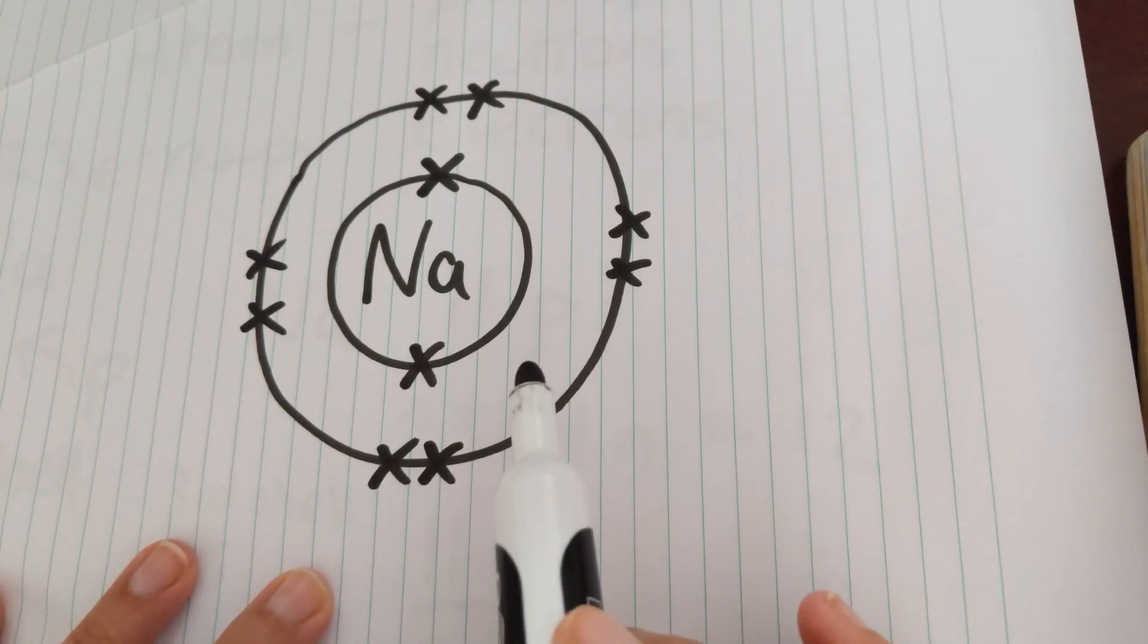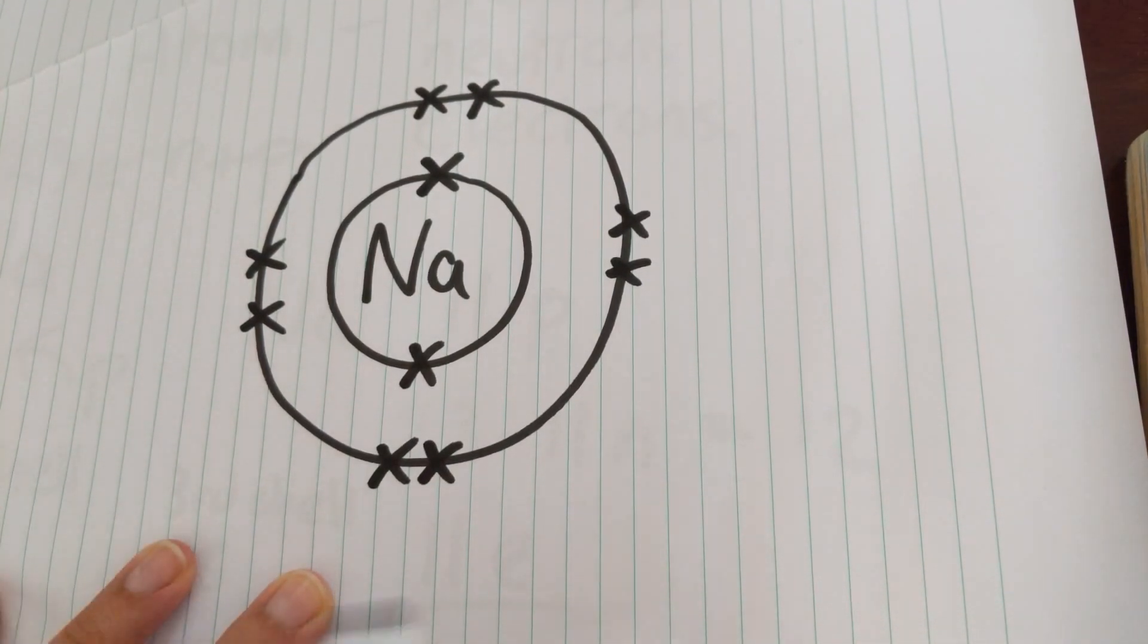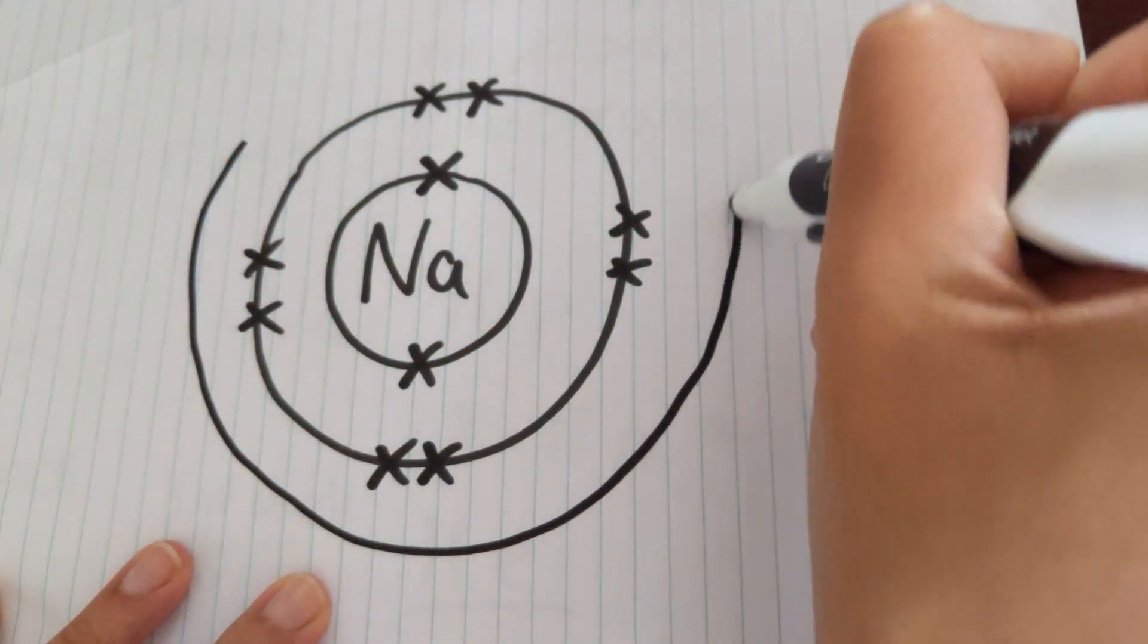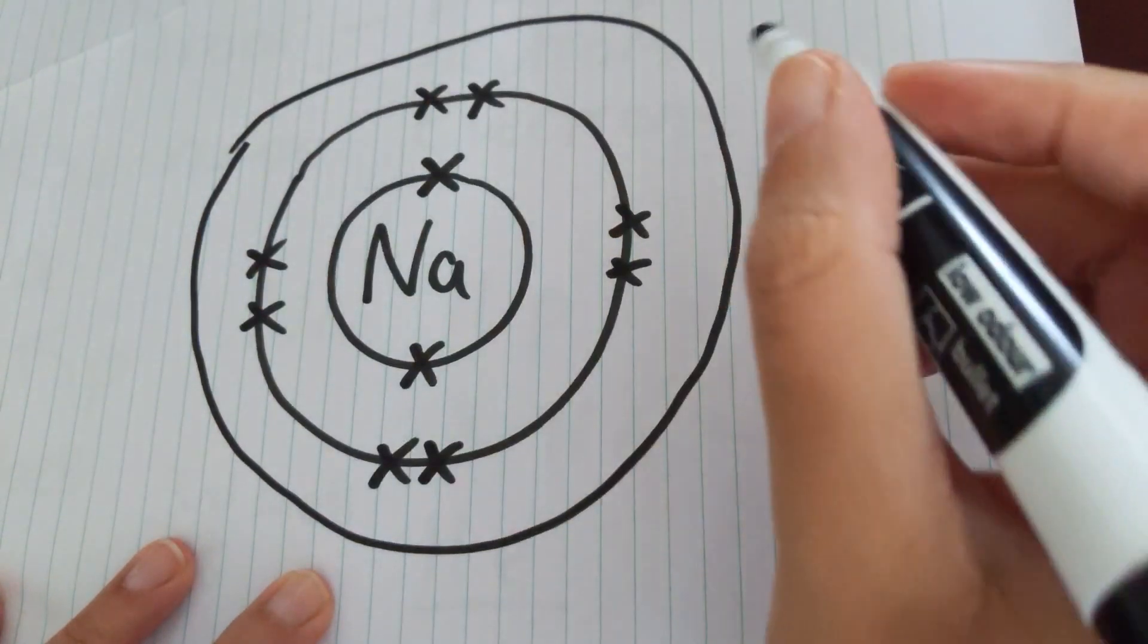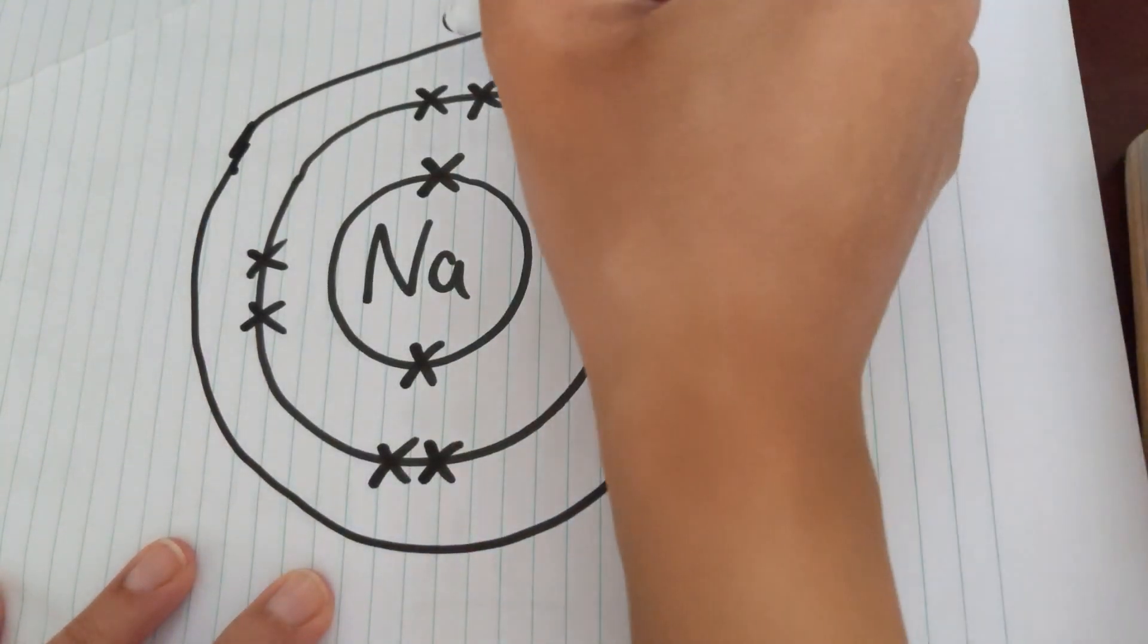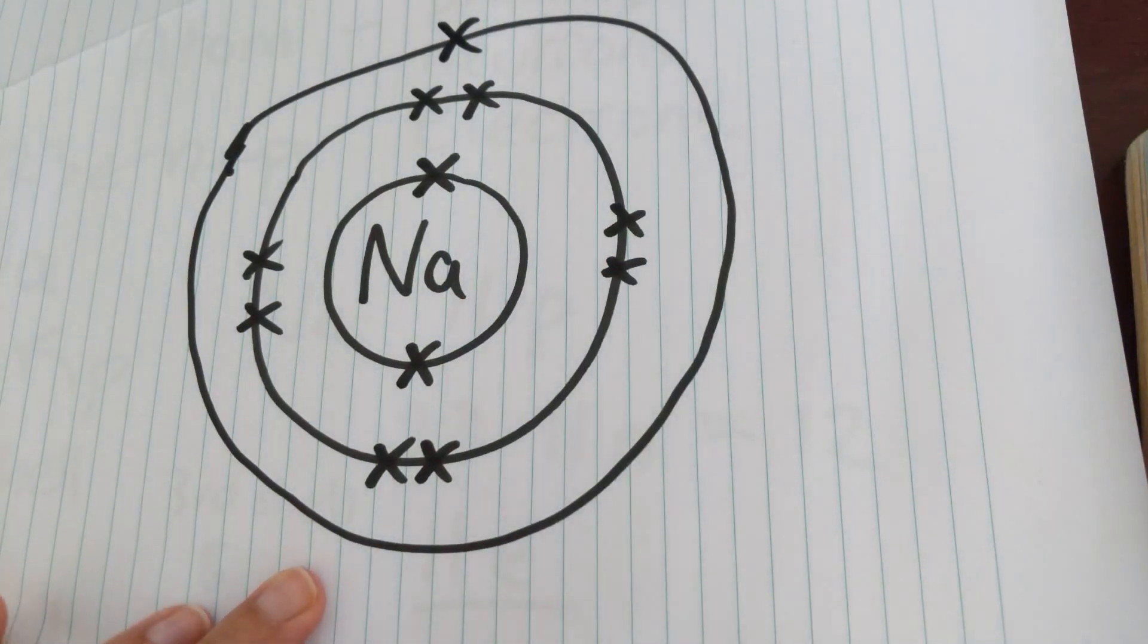So that sodium has 10 electrons on it already, but we know that sodium has a total of 11 electrons. So we need to do another shell. And then that last electron there.